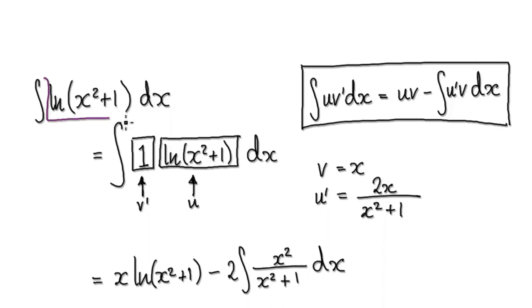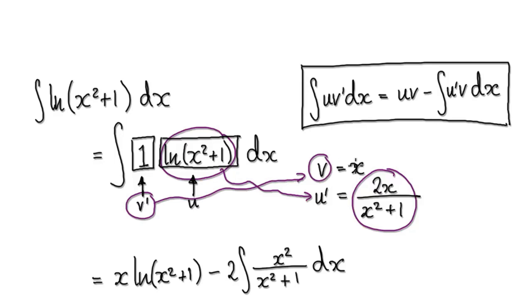So let's visualize this block here as 1 times its exact same self and set this to be u and set this to be v prime. Well, if this is u, then its derivative would be this thing here. If this is v prime, then integrate it, then v would be x.